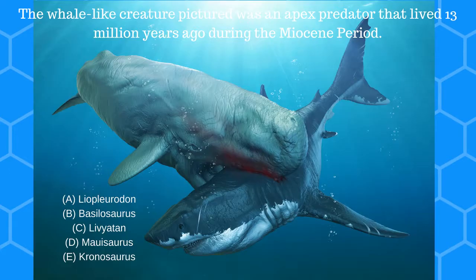Question number 1. The whale-like creature pictured was an apex predator that lived 13 million years ago during the Miocene period. A. Liopleurodon, B. Basilosaurus, C. Leviathan, D. Mauisaurus, E. Kronosaurus.